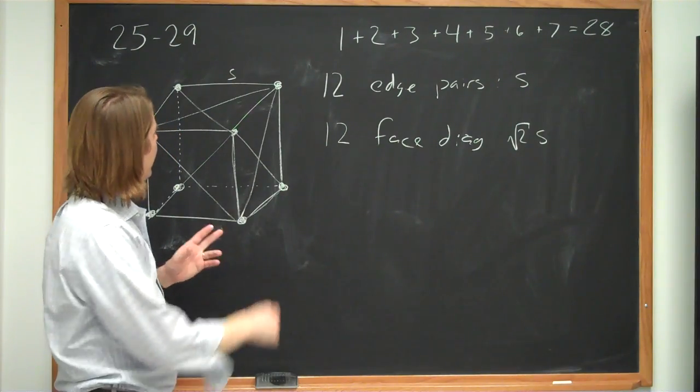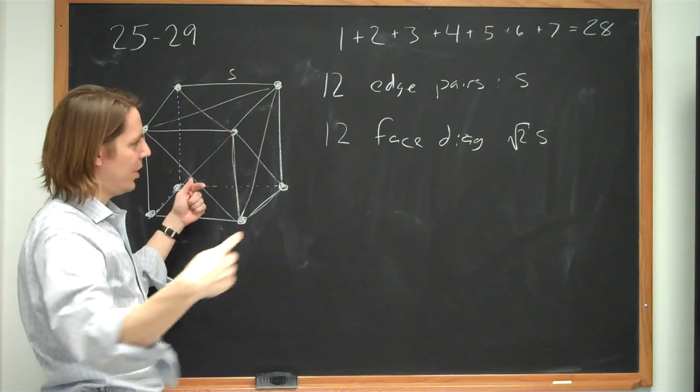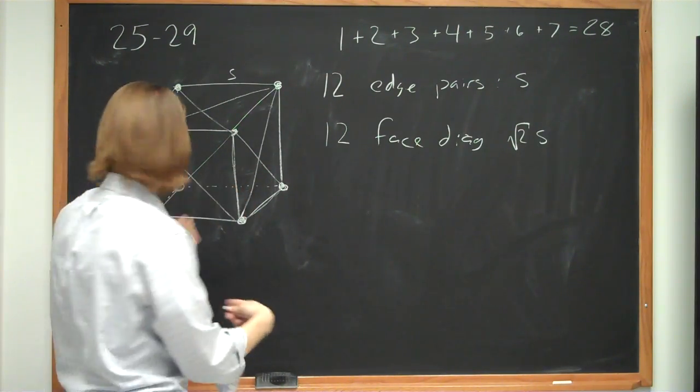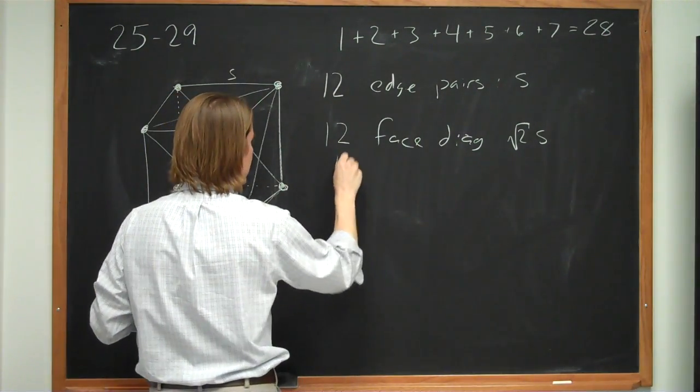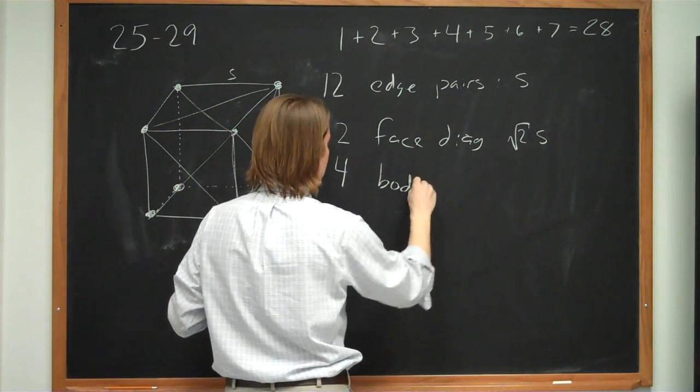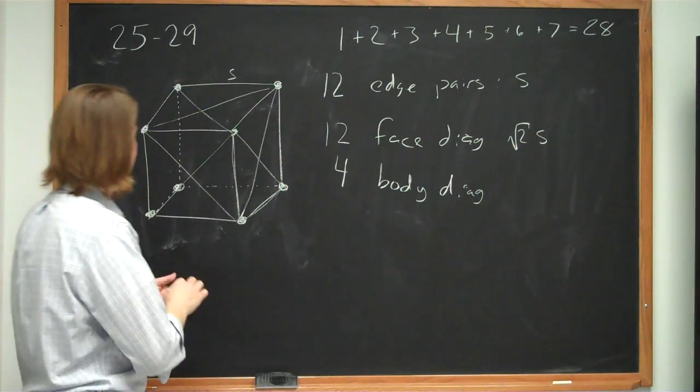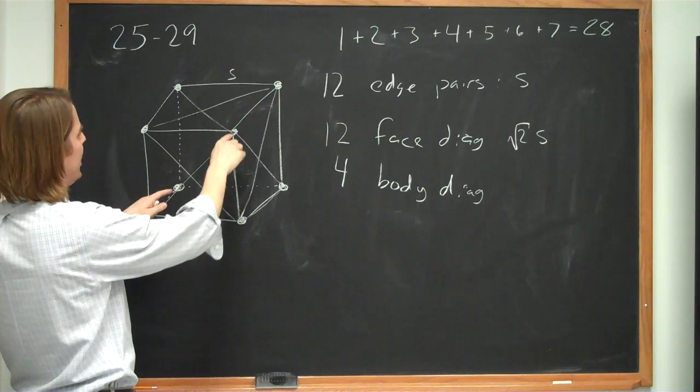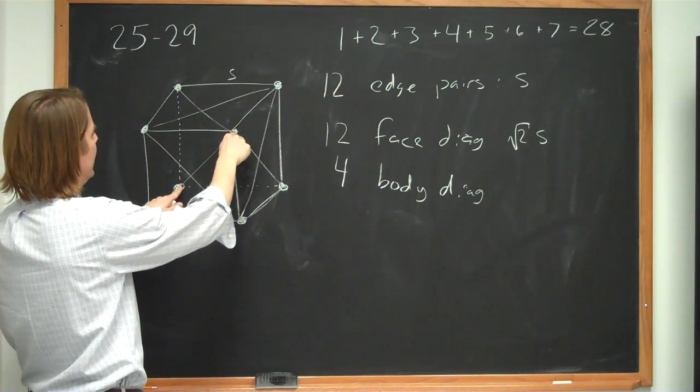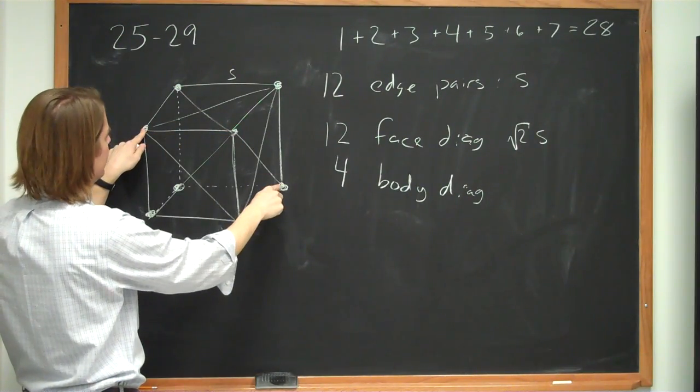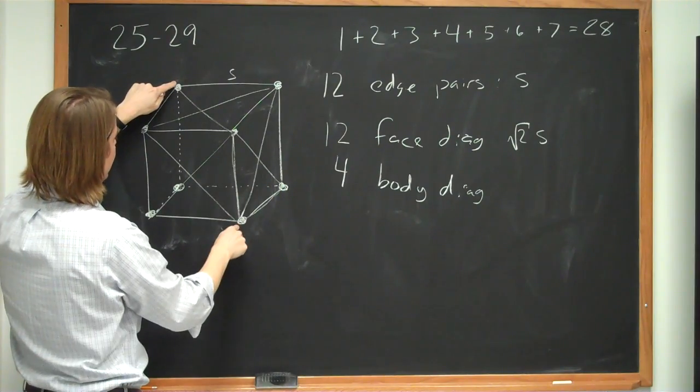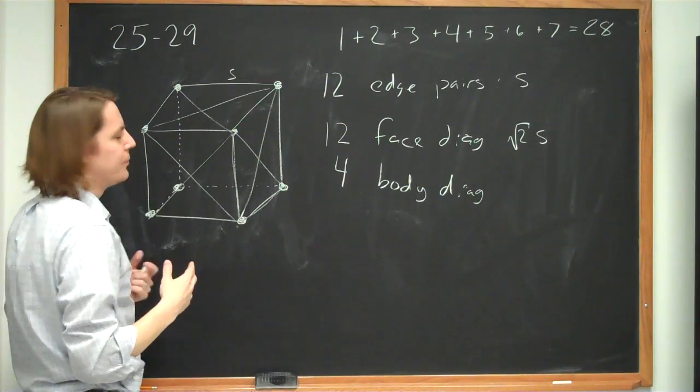And then the third kind of pair, that covers everything except the ones through the cube. So there are 4 body diagonals, I'll call them. And that would be this front one and this back one, or this one and this one, or that one and that one, or that one and that one. So there's 4.